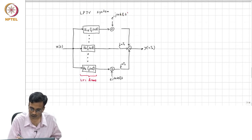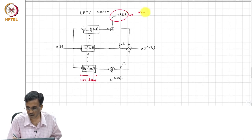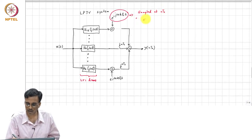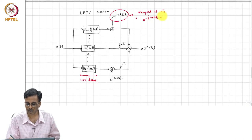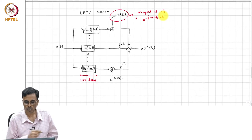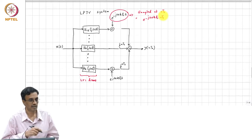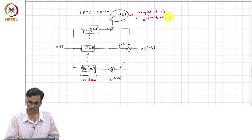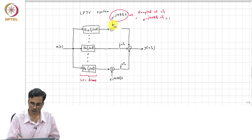If I sample e^{-j2π k f_s t} at n times T_s, I get e^{-j2π k f_s · n T_s}. Since f_s · T_s equals 1, this simplifies to e^{-j2π k n}, which equals 1. So likewise, in all these branches, all of these exponential terms become 1.